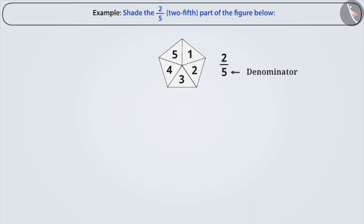Similarly, in this fraction, the numerator is 2. It represents that the two portions should be shaded. You can see that this whole figure is divided into 5 equal parts. Therefore, to represent 2 by 5, we have to shade any two parts of these 5 parts.